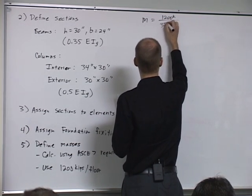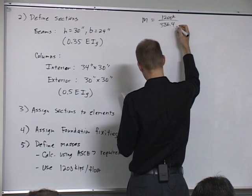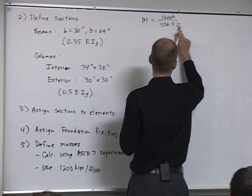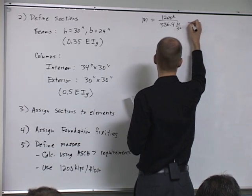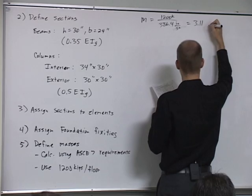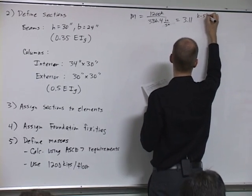All we need to do here is convert the 1200 kips per floor to units of mass rather than units of weight. So we'll do our conversion factor here and get 3.11 as the units of mass, and that's in kip-second squared per inch.